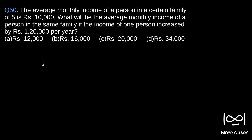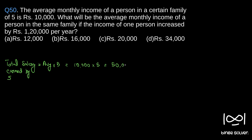Total salary equals average into 5, which is 10,000 into 5, which is 50,000 rupees. So per month, all 5 people the combined salary will be 50,000. Now it is given that one person's salary increased by 1,20,000 per year.